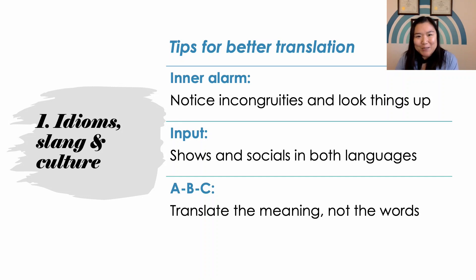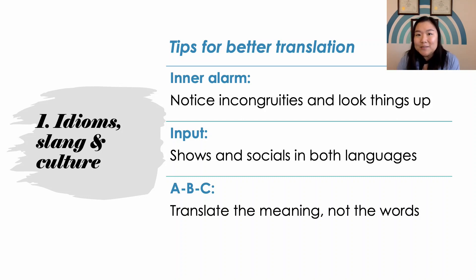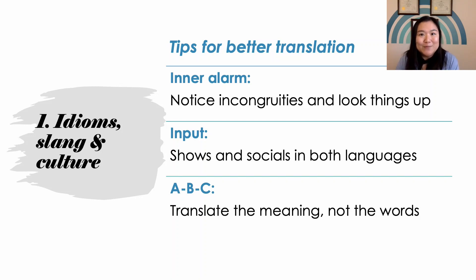Here's a quick review of what we talked about for achieving better translation. We want our inner alarm system engaged at all times to notice incongruities and avoid blind spots. We want to work on our inputs — always learning and exposing ourselves to the latest linguistic developments in both working languages so we understand source text correctly. And we want to focus on the message and intent, not word-for-word equivalence.